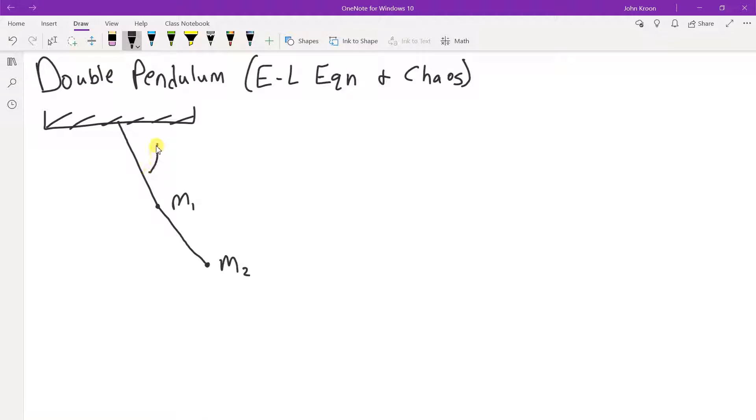And they don't have to be the same length. Let's call this one l1 and this one l2, where l2 is just this component and l1 is just the first length of massless wire.